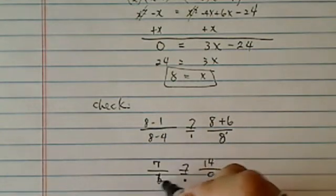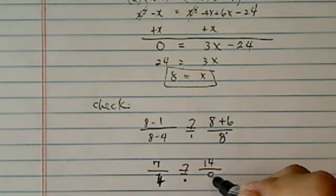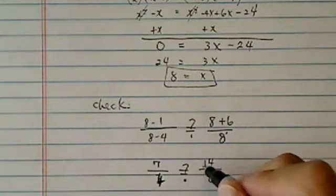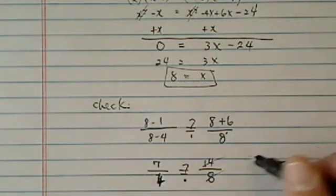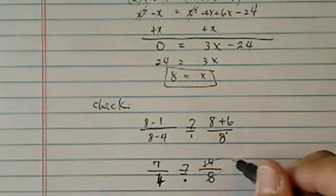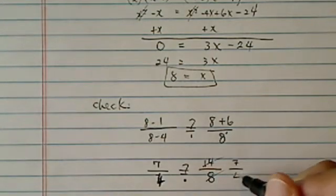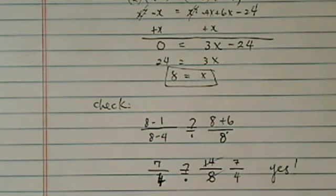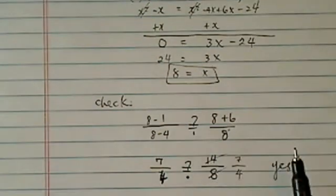That's 4. So on the right side I have 14 over 8, and divided by 2 here, I have 7 over 4. So the answer is yes — indeed, x is equal to 8. That's how we solve a rational equation.